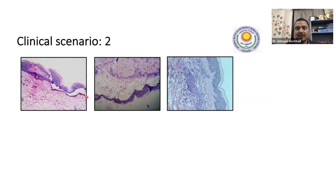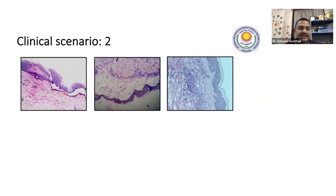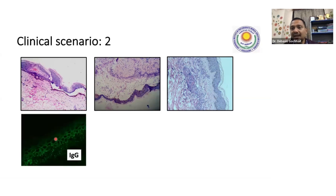Here you can make out that the epidermis has been separated and one layer of epidermal or basal cells is attached to the dermis. This is called suprabasal splitting — the separation is within the epidermis at the suprabasal location. The basal cells attached here look like a row of tombstones — this is called the row of tombstone appearance. Row of tombstone appearance with some acantholytic cells is very characteristic of pemphigus.